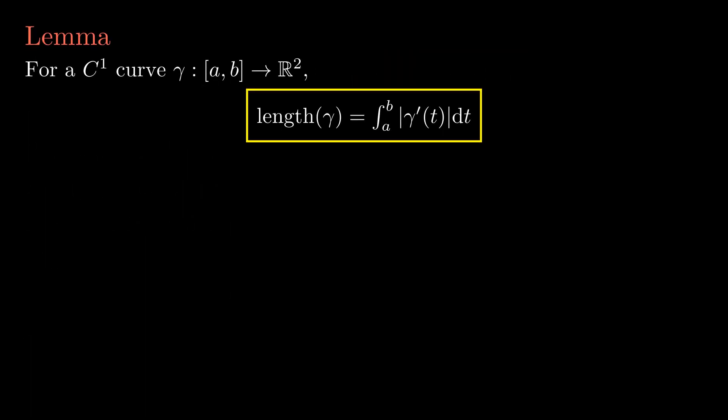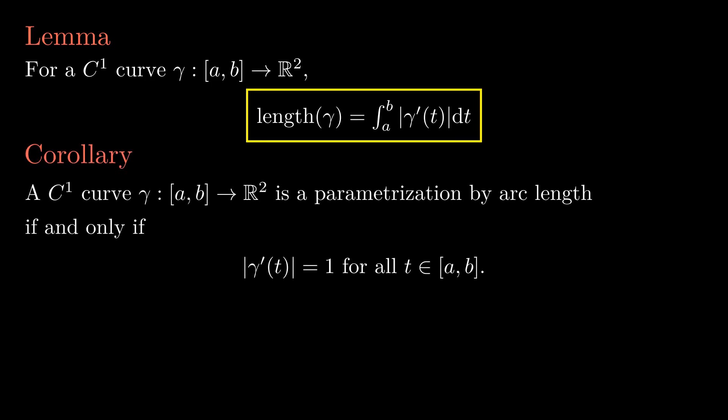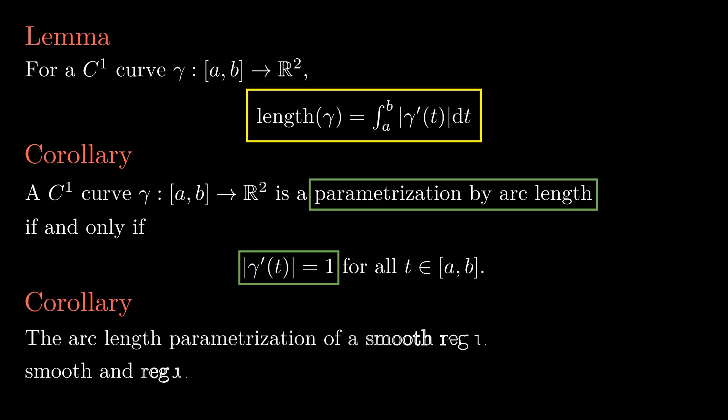So now we have this nice formula for the length of a smooth curve. With this, one can show that a C1 curve is a parametrization by arc length if and only if the speed is 1 at all times. Also, as a second corollary, one gets that the arc length parametrization for a smooth regular curve is smooth. I again leave to you proving these corollaries using the length formula we just proved.